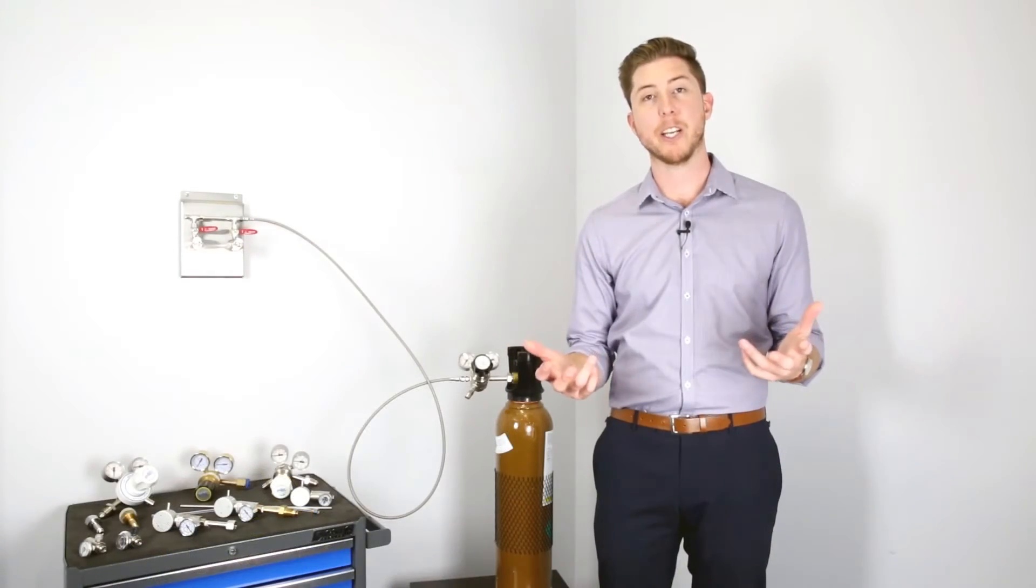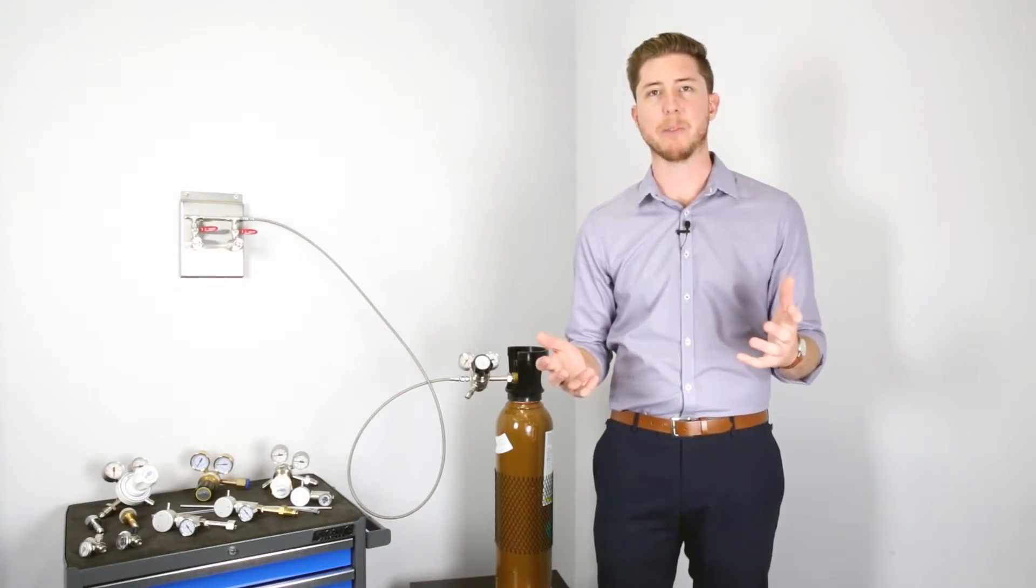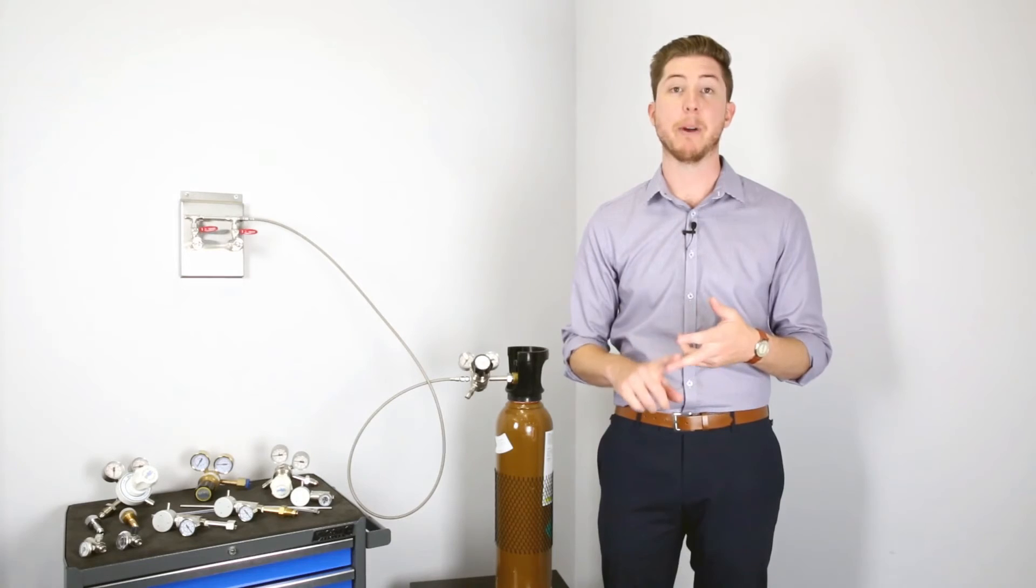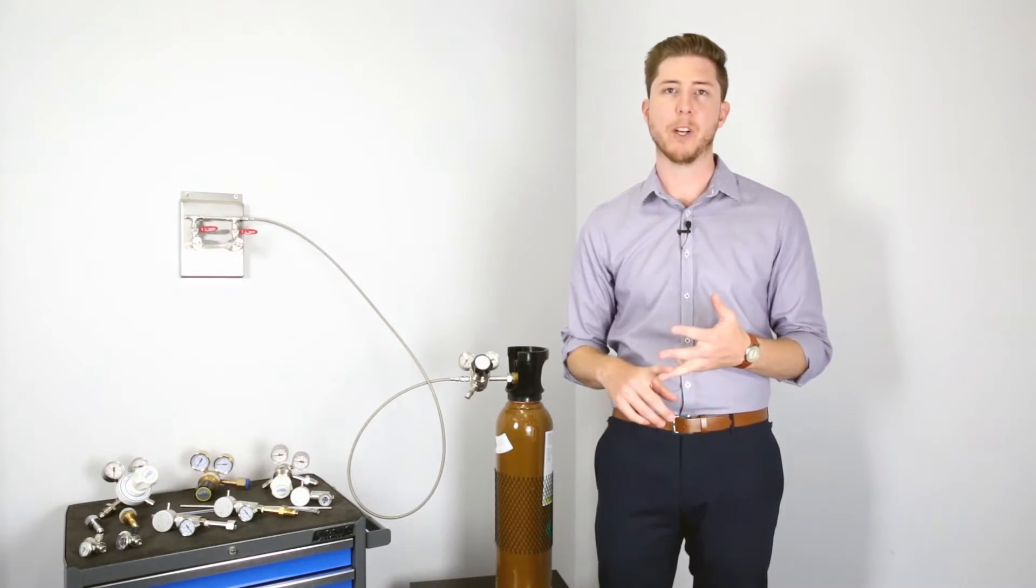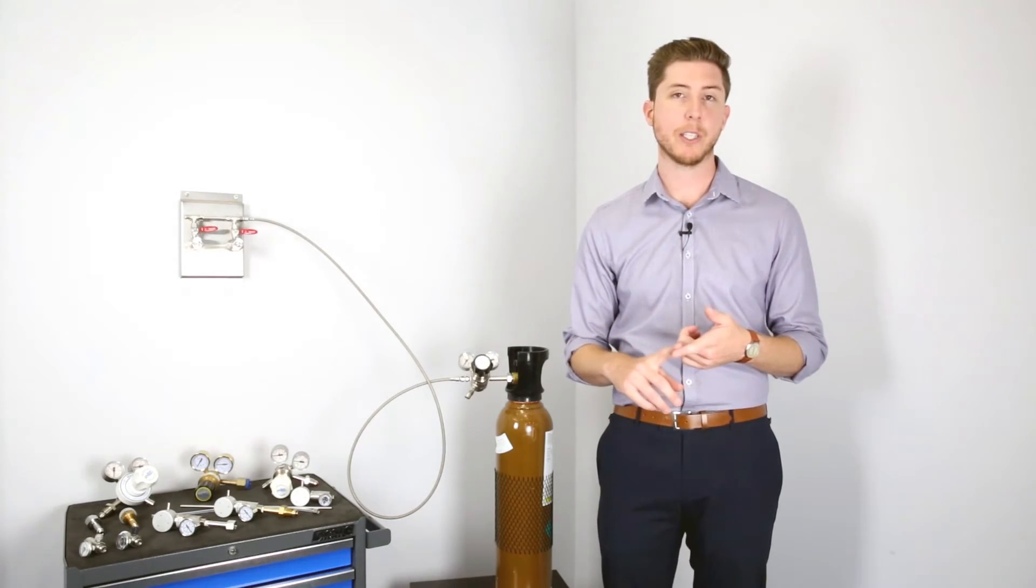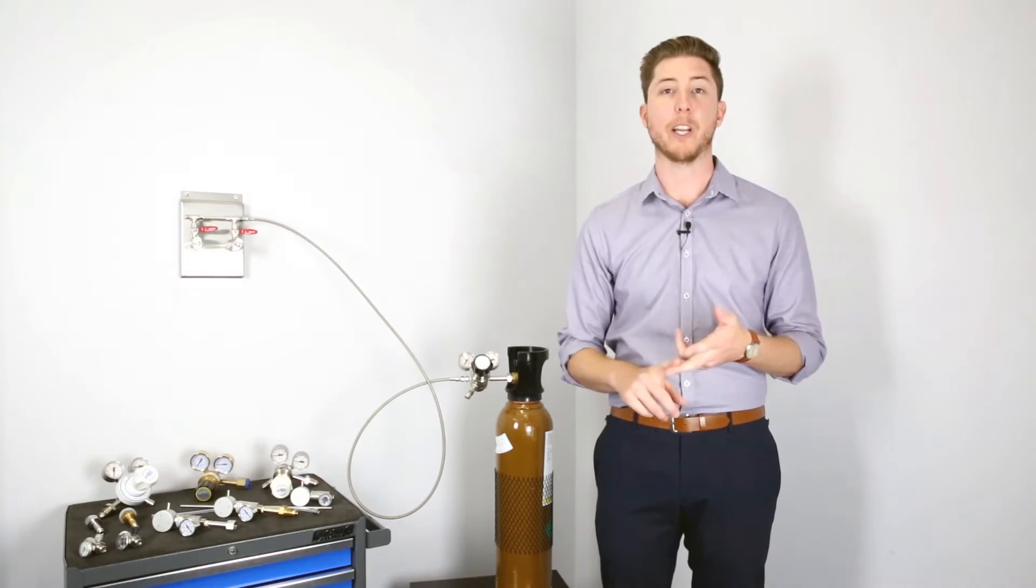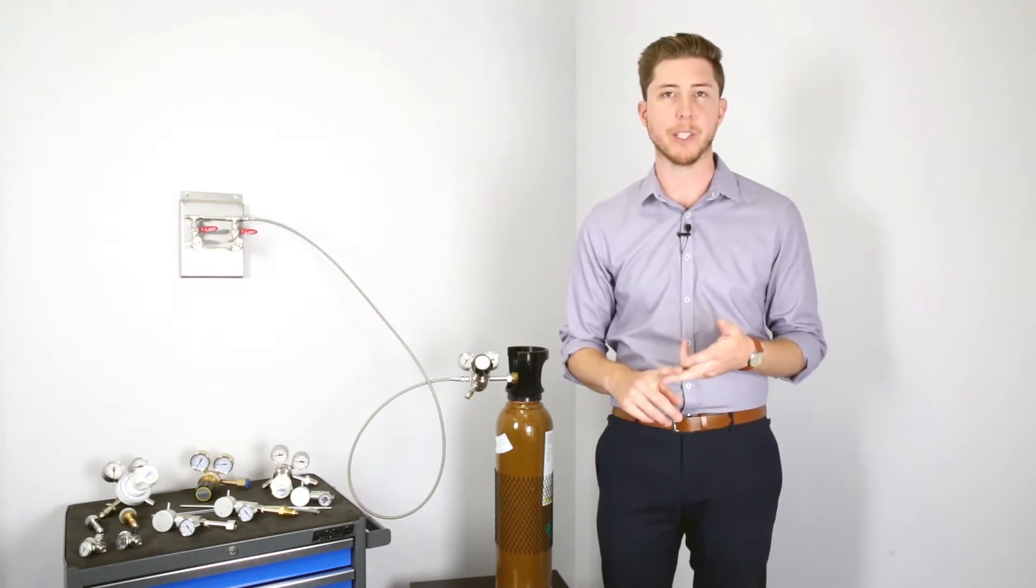A GDS can be as simple as a cylinder, regulator and a piece of tubing or can be more involved with outlet panels, specialised hardware and specialised regulators. To design a GDS, we need to completely understand the customer's application for calibration and bump testing. This information provides details to choose the correct cylinder size, as well as the correct material for your hardware and regulators to maximise the efficiency of the system.